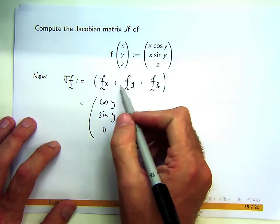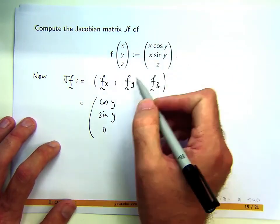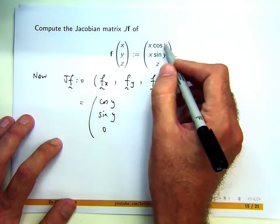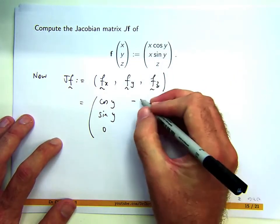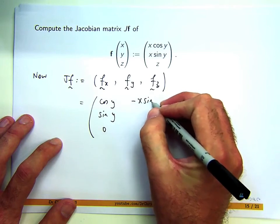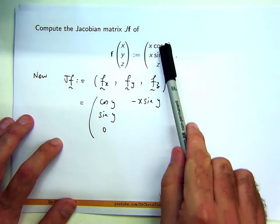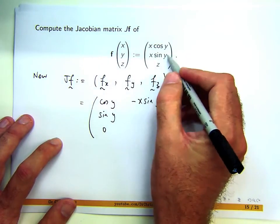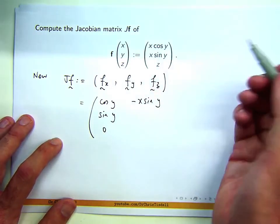Let's differentiate component-wise with respect to y partially and write that as a column. If I differentiate this with respect to y, I'll get -x sin y because cos y goes to -sin y. Same again down here - sin y goes to cos y, and down here that's just going to be zero.